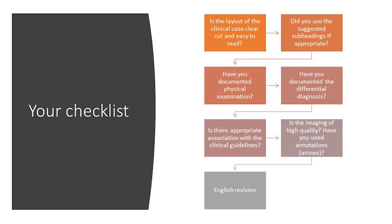Your submission checklist: make sure the layout of the clinical case is clear-cut and easy to read. Use the suggested subheadings when appropriate. Make sure you have documented the physical examination and included the differential diagnosis in your text. Ensure there is appropriate association with clinical guidelines. As highlighted, it is important that imaging is of high quality and that you use annotations and arrows when appropriate to teach the audience with your case. Last but not least, make sure you have an extensive English revision of your manuscript before submitting to the journal.